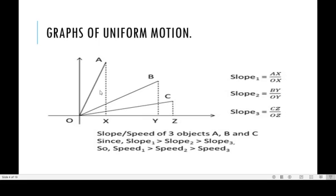We have three objects A, B, and C moving at different speeds, and we can use this graph to determine which object is fastest and which is slowest. Object A has slope 1, object B has slope 2, and object C has slope 3. Slope 1 is greater than slope 2, and slope 2 is greater than slope 3, meaning object A has the greater speed and object C has the least speed. The fastest object is A because it has the greatest slope or gradient.